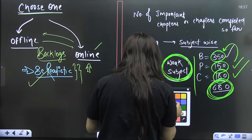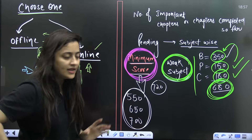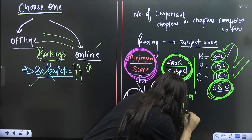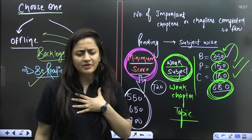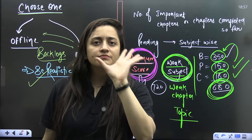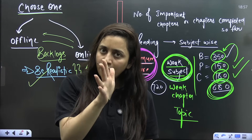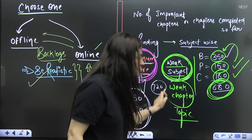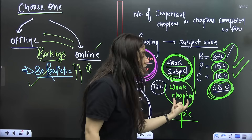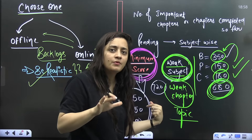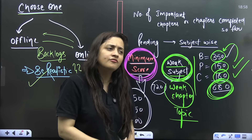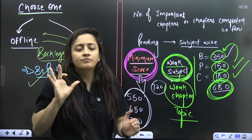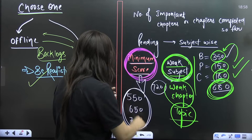Figure out your weak areas. If your subject is weak, only proper planning can save you — focus on the most important chapters, most important topics, and most repeated PYQs. If a particular chapter is weak and very important, switch things up: try watching a different teacher's lecture. If it helps, go for it; otherwise, pick up the most important topics from that chapter.